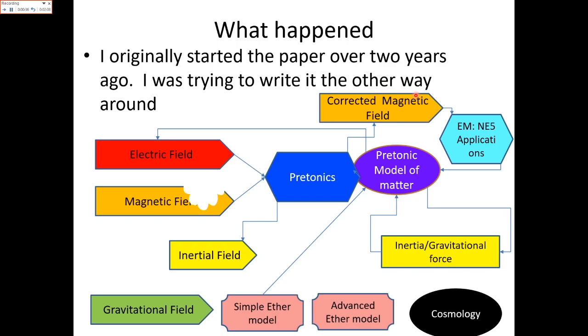That led to the research for new electromagnetism V5, which resolved the problem. But now that we have a corrected model of magnetism, which changes the model of matter, we also had to explain the gravitational field in terms of a simple ether model. To justify the simple ether model, we had to expand to the advanced ether model and show all the cosmological predictions. This whole thing just became a total quagmire.